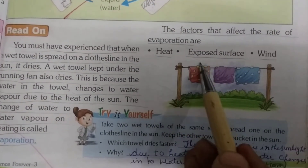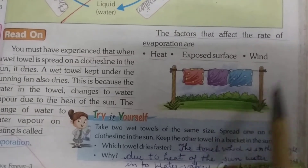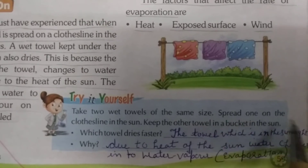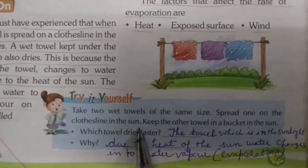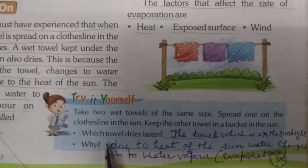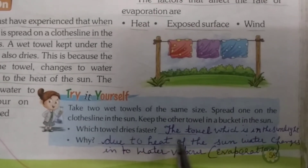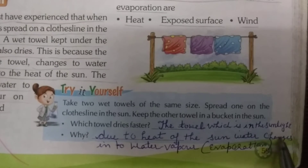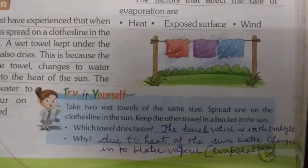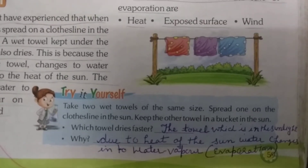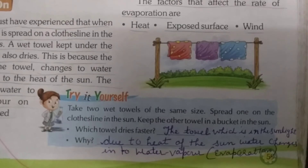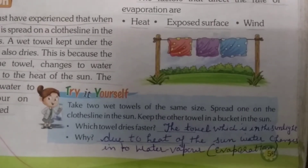Try it yourself. Take 2 wet towels of the same size. Spread one on the clothesline in the sun. Keep the other towel in a bucket in the sun. Which towel dries faster? The towel which is in the sunlight. Why? Due to heat of the sun, water changes into water vapor — we call it evaporation.